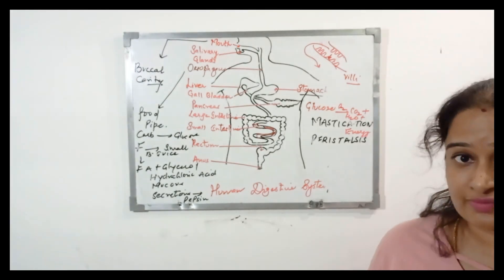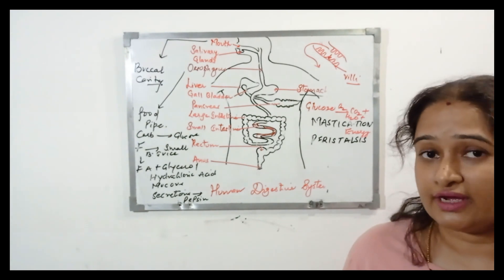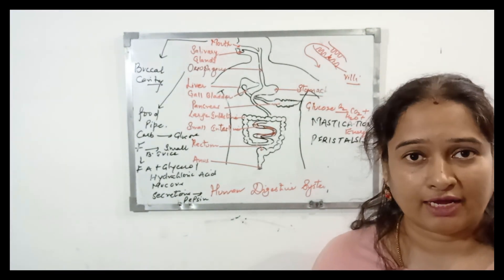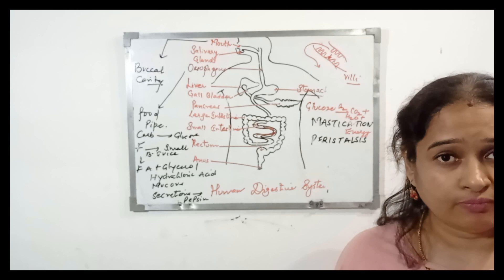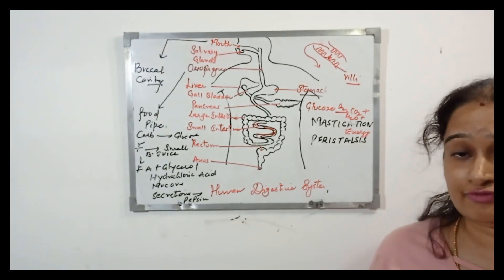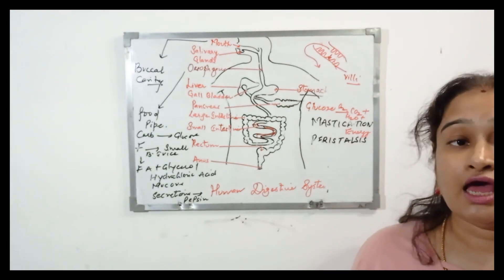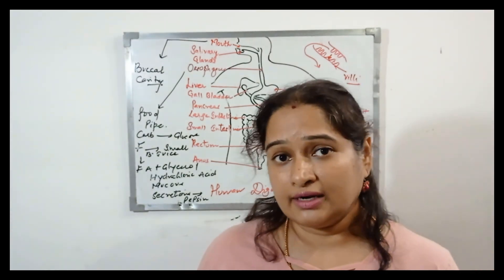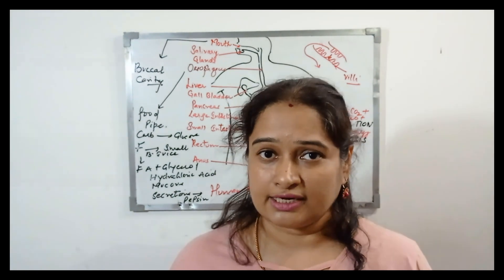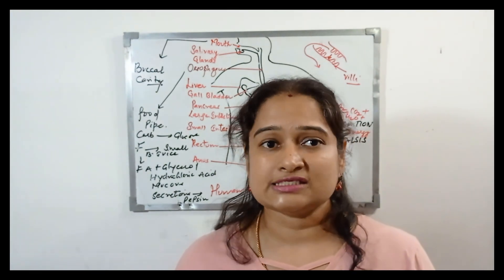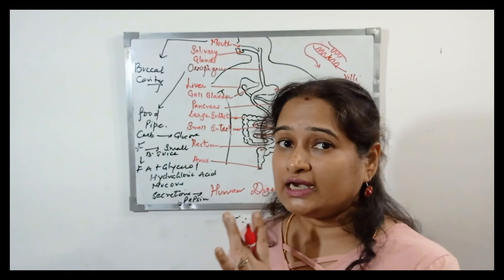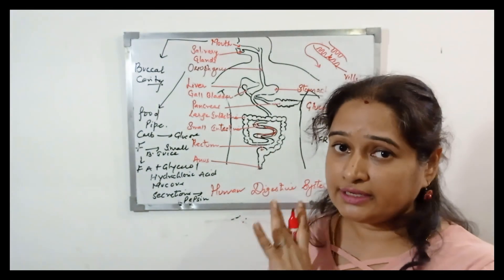The amino acids in the digested food are used for building up our body, for growth and repair, and for converting into proteins. The fatty acids and glycerol that have reached every body cell are then used to build components of the body or stored as fats. In this way, the assimilation of food takes place and the complete digestion of food is finished.